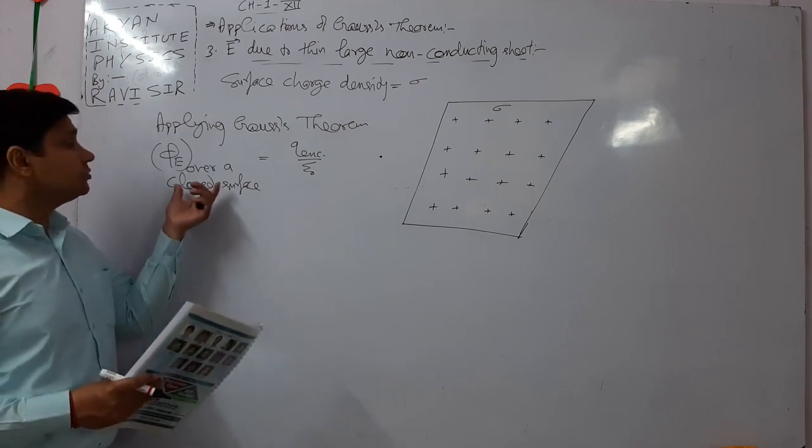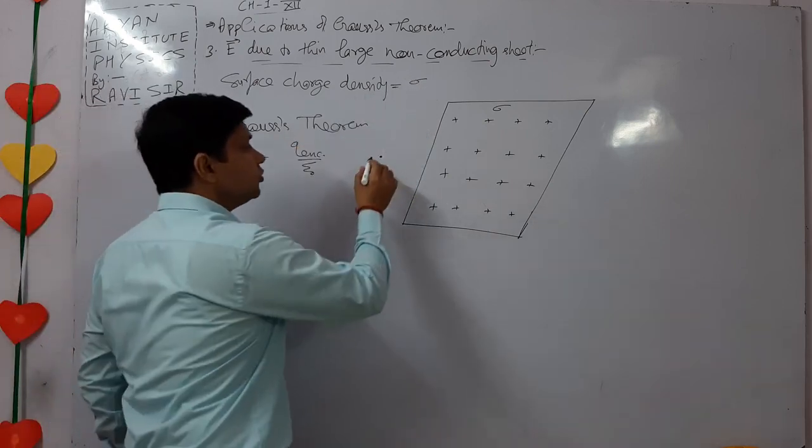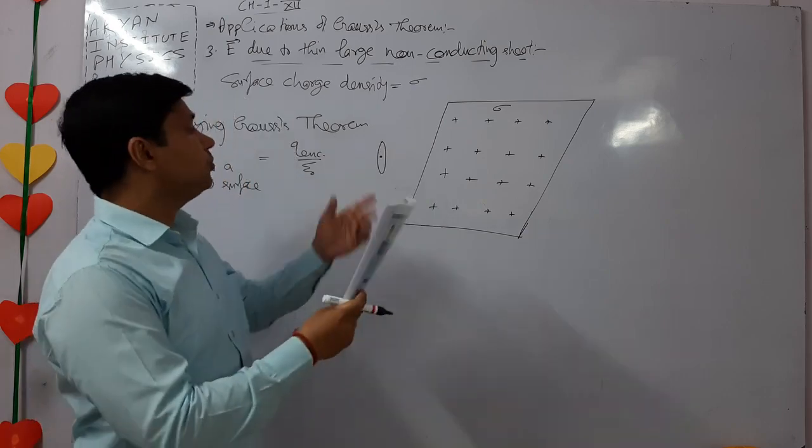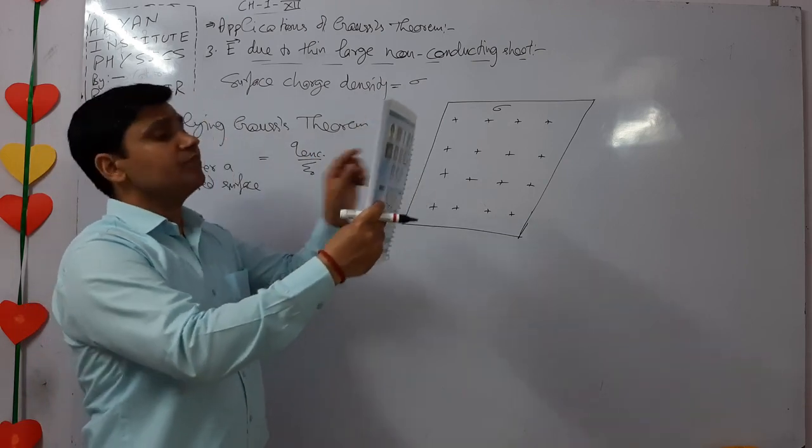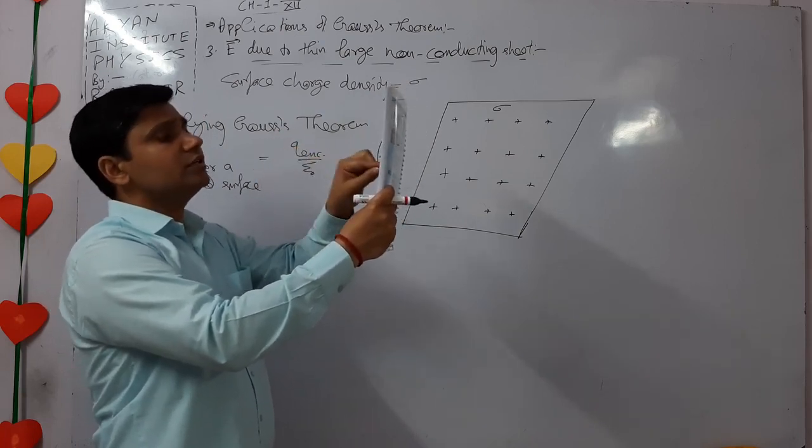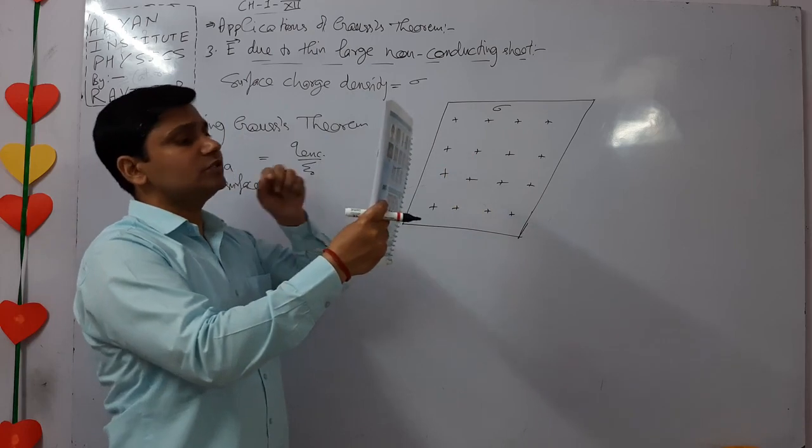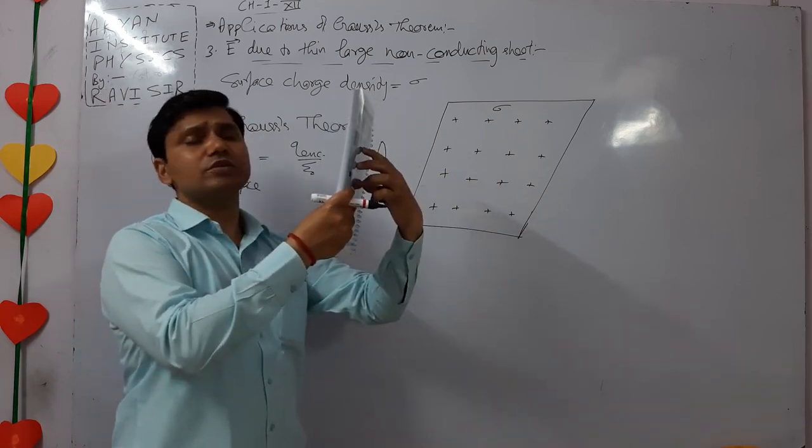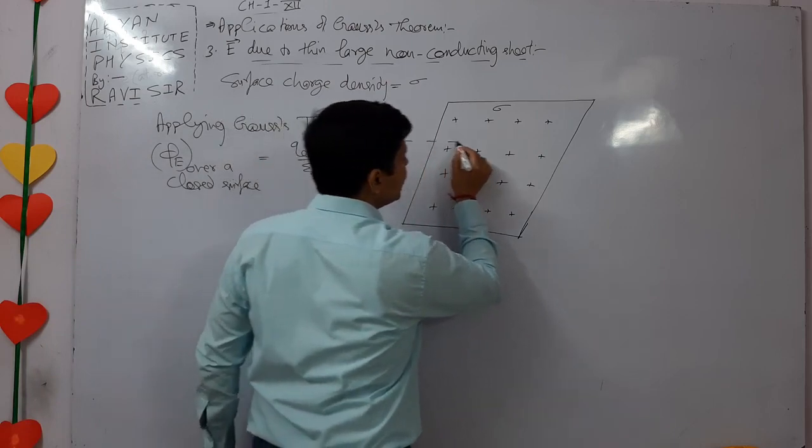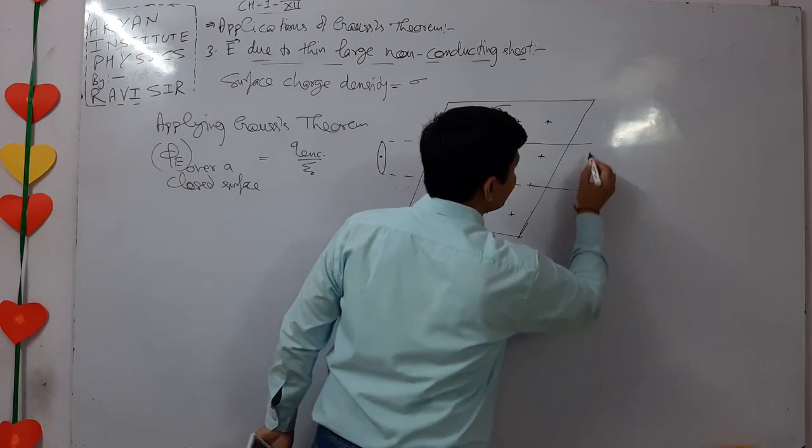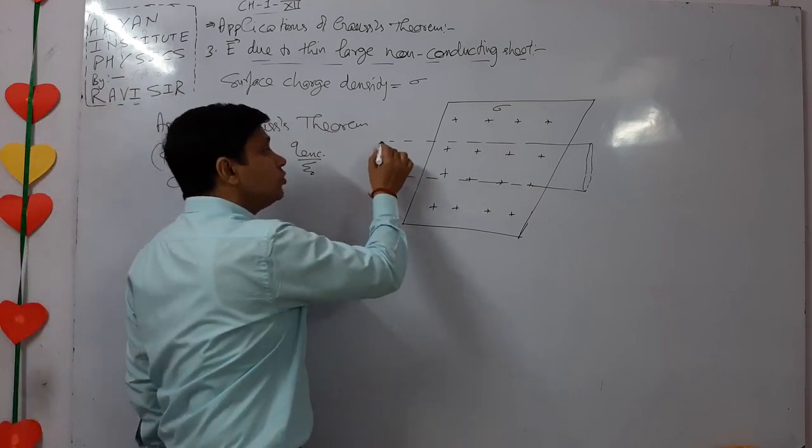Now the problem is that Gauss theorem is applied on a closed surface. This sheet is an open surface. But Gauss theorem requires a closed surface. To make the closed Gaussian surface, at the same distance, the same area, we have to draw it. To apply closed surface.